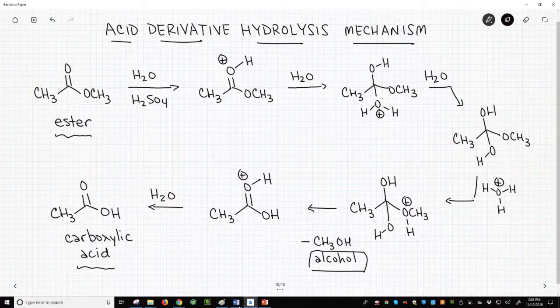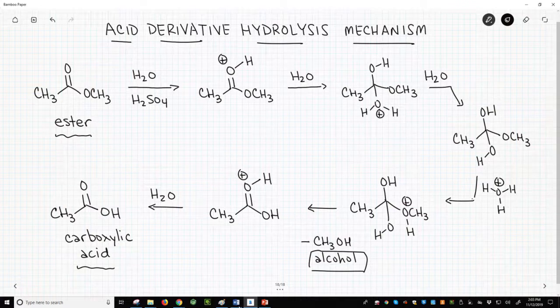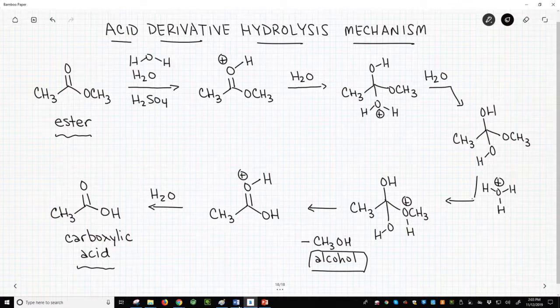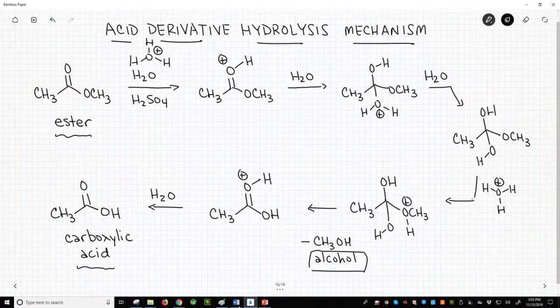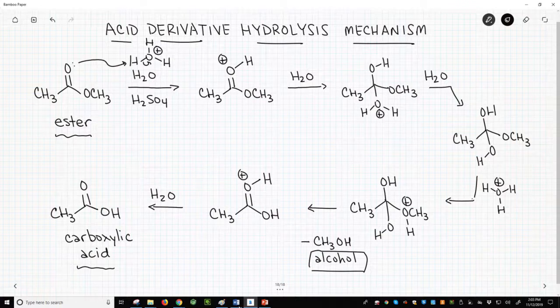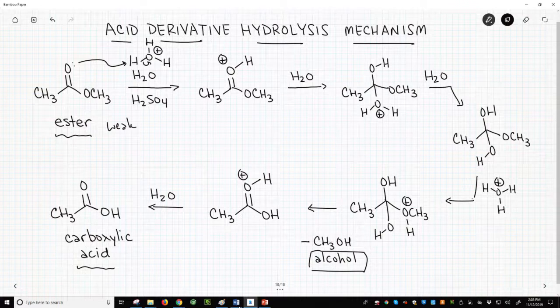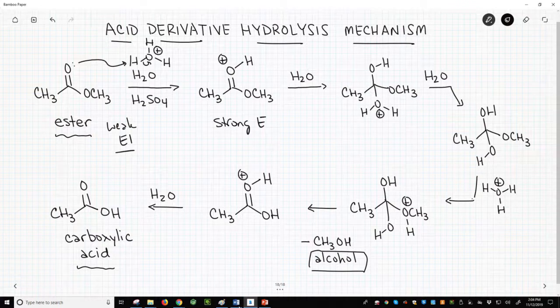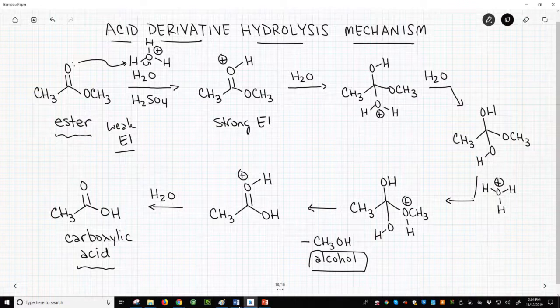Alright, step one for almost any acid-catalyzed reaction is to protonate something. In carbonyl chemistry, we'll always protonate the carbonyl. So let's use our functional acid, hydronium, to protonate the carbonyl. What we've done is convert our weakly electrophilic ester carbonyl into a strong electrophile. This will now react with even weak nucleophiles, namely water, which is what we have in the reaction.